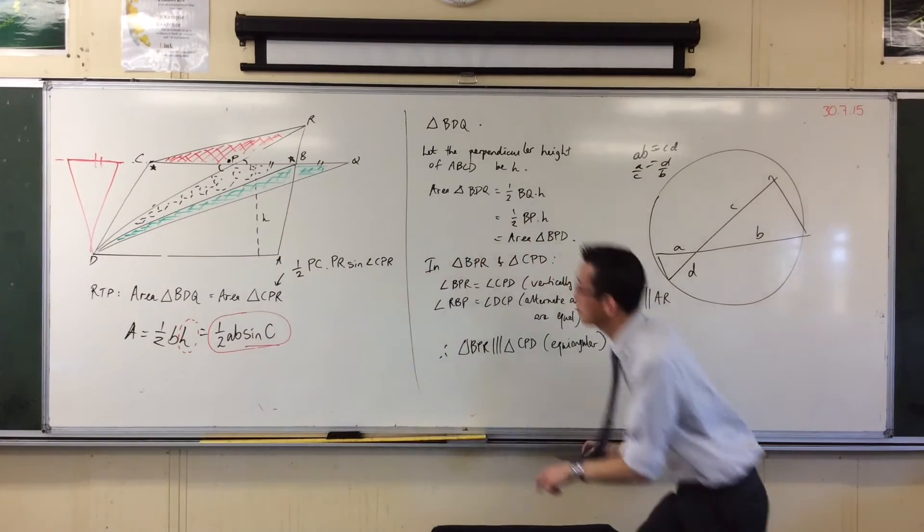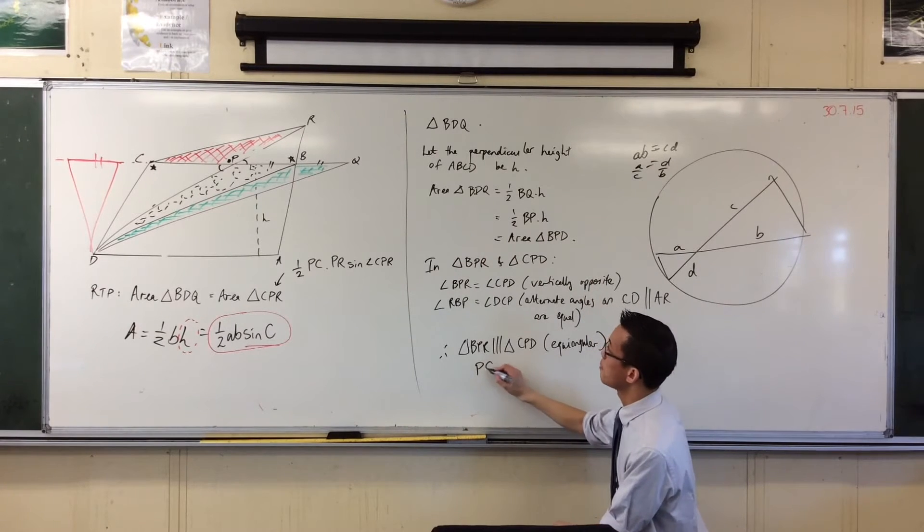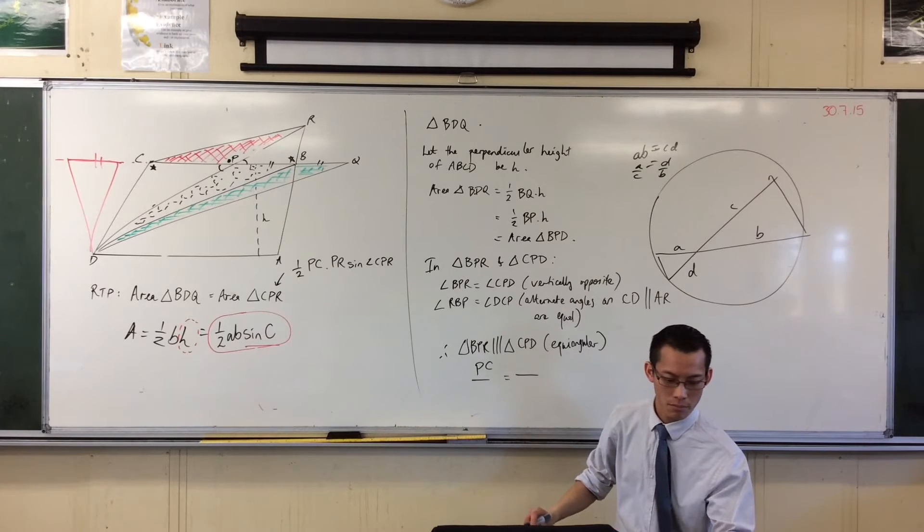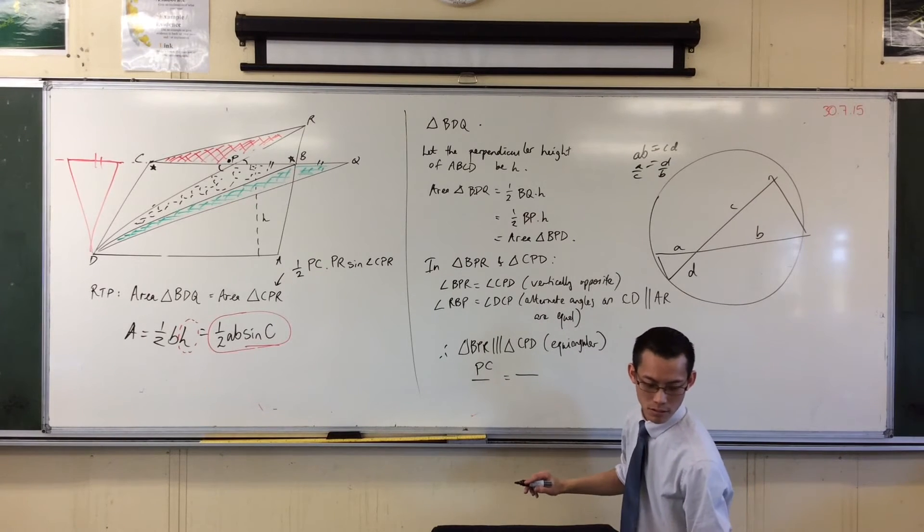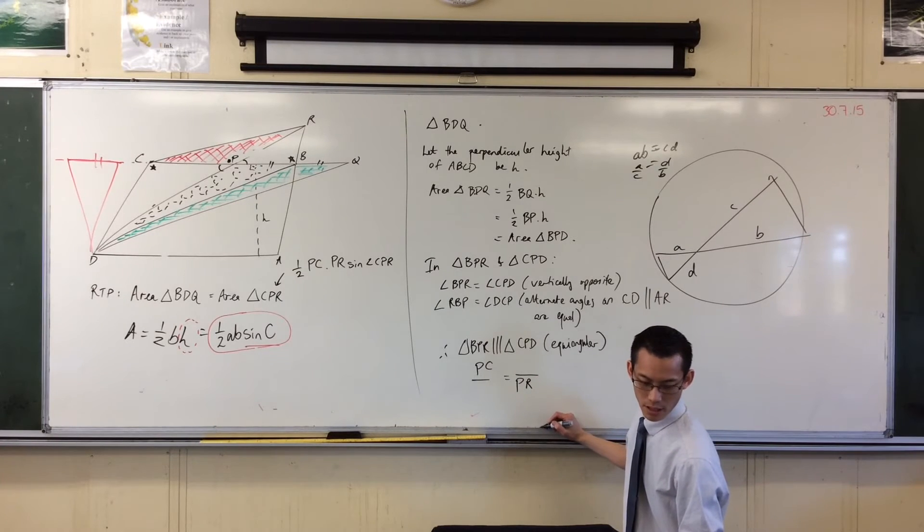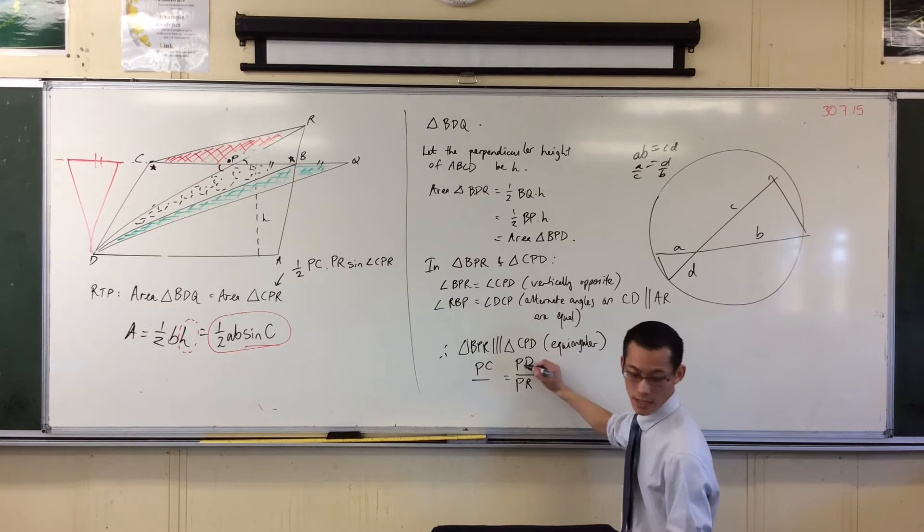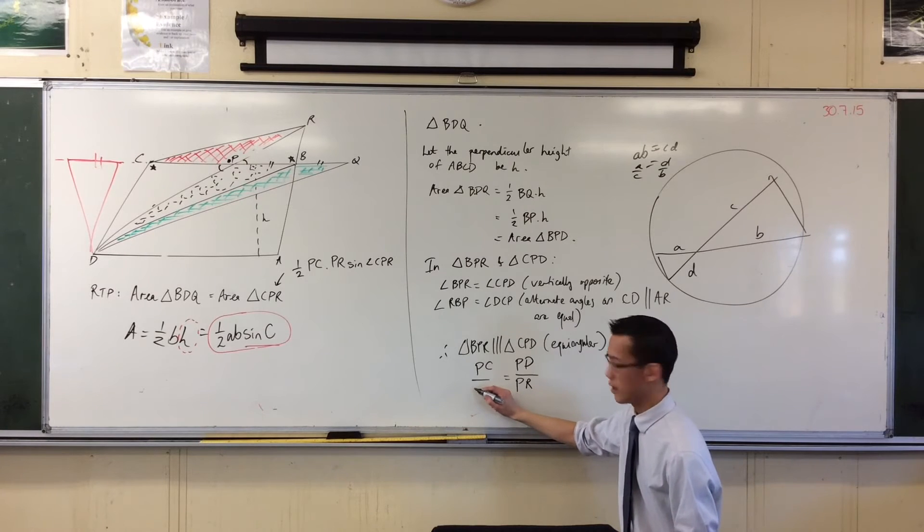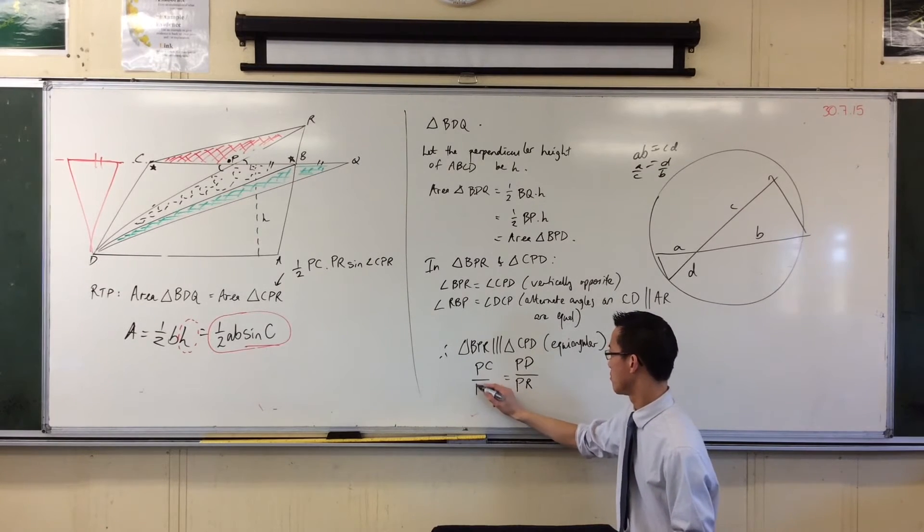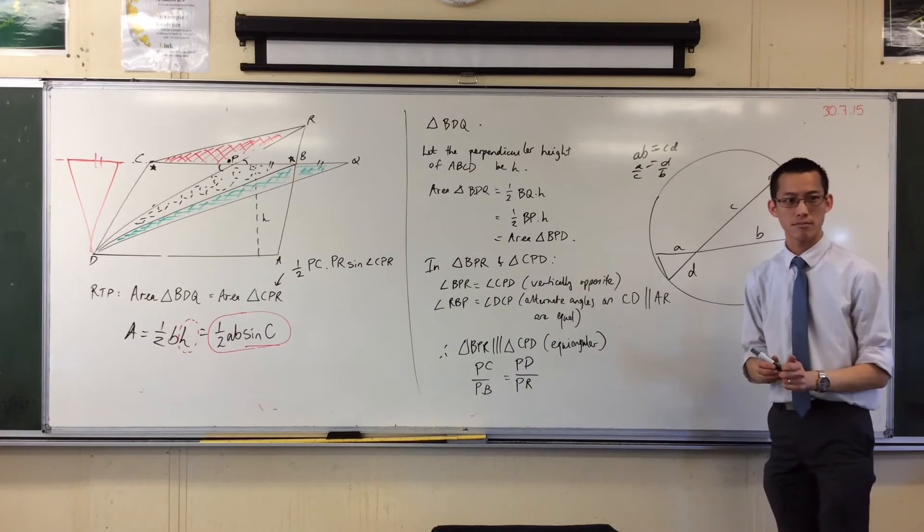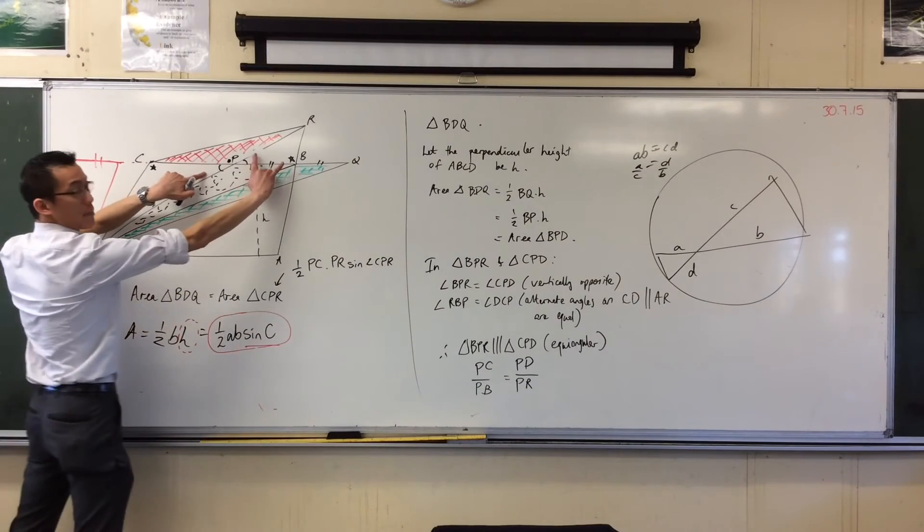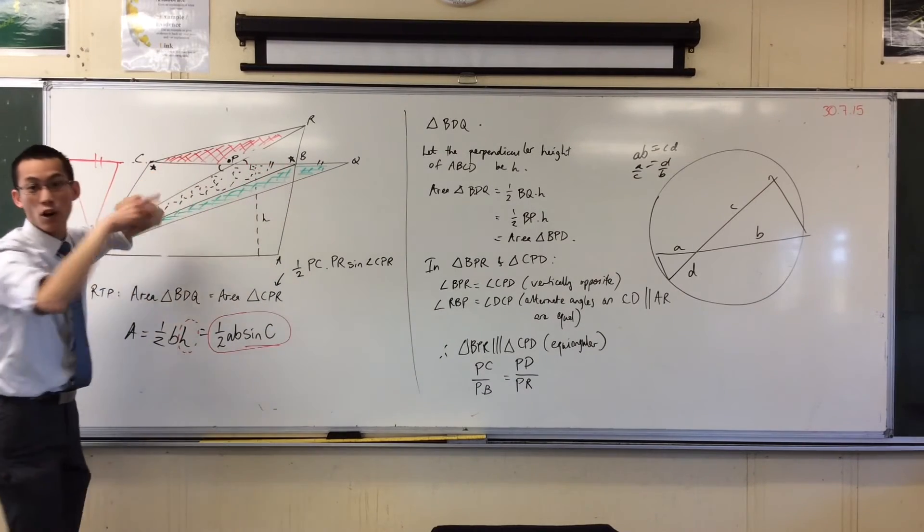So I've got PC and PR there, so it looks like I'm going to say, let's compare PC to, I've even written down, PC and PR. That's going to give me PD and PB. Are you happy with that? So what am I comparing? I'm comparing PC and PB, those sides are in different triangles, but they correspond, right?